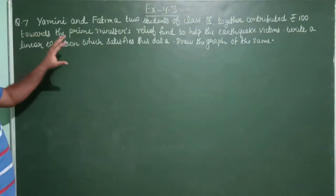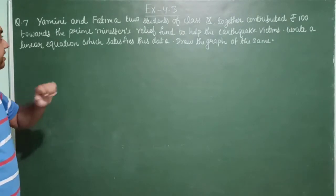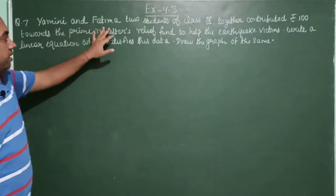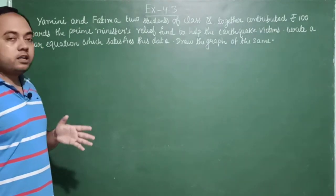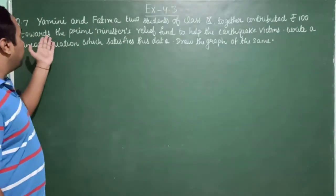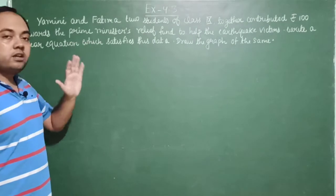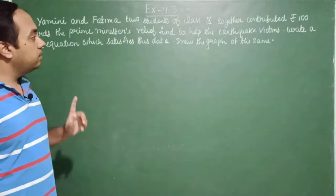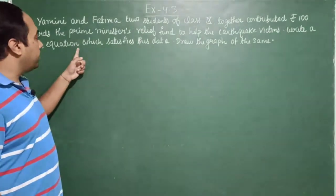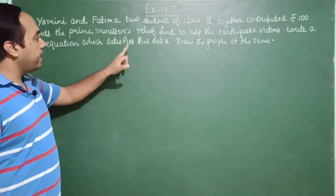Now question number 7 of exercise 4.3. The question is: Yamini and Fatima, two students of class 9, together contributed rupees 100 towards the Prime Minister's Relief Fund to help the earthquake victims.